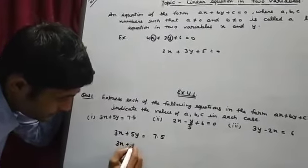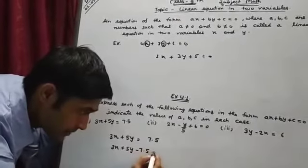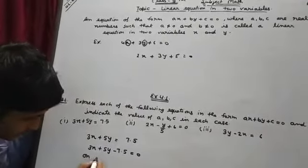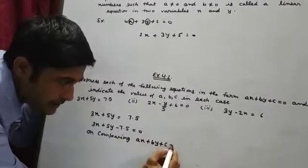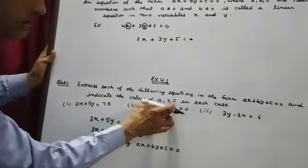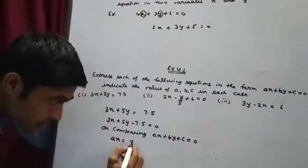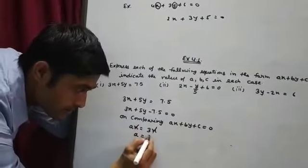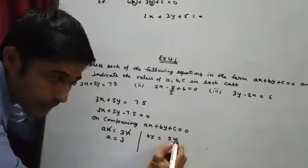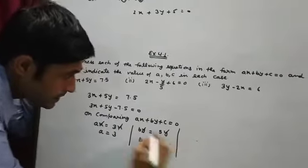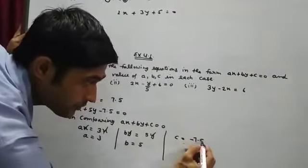Here you can see this number 7.5 — if we transpose it to the other side, the sign will change. Now on comparing with ax plus by plus c equal to zero, we have to find the unknown numbers a, b, c. So ax equals 3x, meaning x cancels and a equals 3. Similarly, by equals 5y, so b equals 5. And c is your constant number, so c equals minus 7.5.